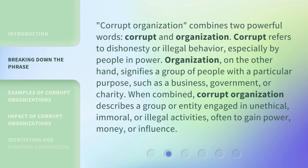Corrupt Organization combines two powerful words, corrupt and organization. Corrupt refers to dishonesty or illegal behavior, especially by people in power. Organization, on the other hand, signifies a group of people with a particular purpose, such as a business, government, or charity. When combined, corrupt organization describes a group or entity engaged in unethical, immoral, or illegal activities, often to gain power, money, or influence.